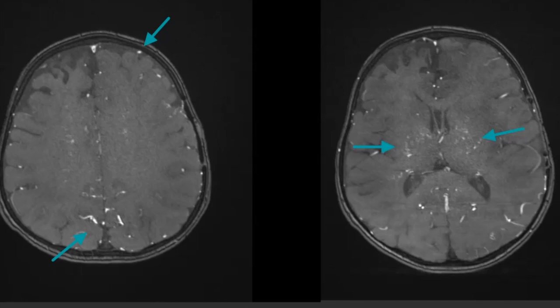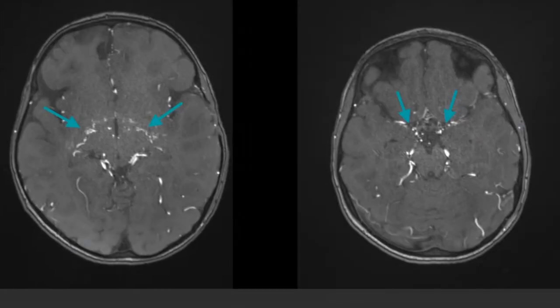Time of flight angiography images show prominent dural and leptomeningeal collaterals, as well as prominent collaterals in bilateral gangliothalamic regions. These images also show prominent bilateral basal collaterals.